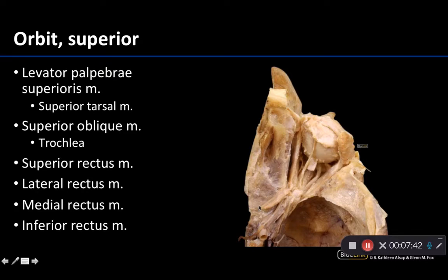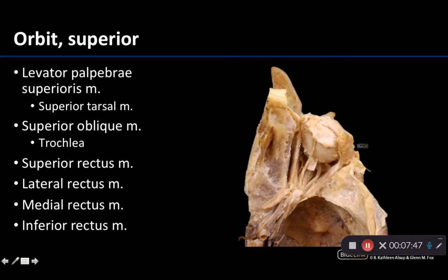We've done a few other things here — we are not looking at the superior oblique anymore. The superior oblique in this image has been reflected, and at this point I don't see the trochlea or a muscle tendon going through the trochlea as clearly, so we know that we are looking at the medial rectus at this point. In order to see the medial rectus, that superior oblique has to be reflected.